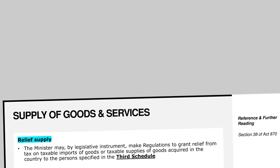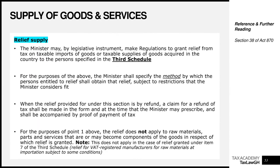A very important recap: we have looked at exempt supplies — those supplies do not attract VAT at all and are found on the first schedule to the VAT Act. We've also looked at zero-rated supplies — these are not exempt; they are taxable, but the rate of tax you apply is 0%, and they are found on the second schedule to the VAT Act.